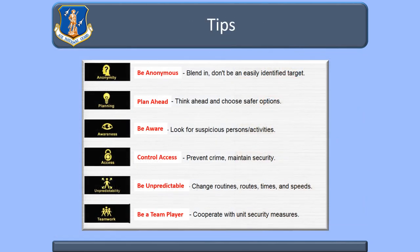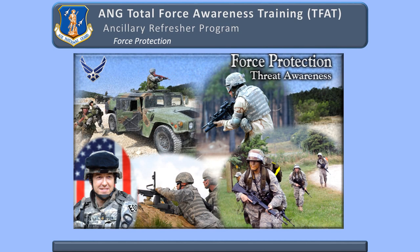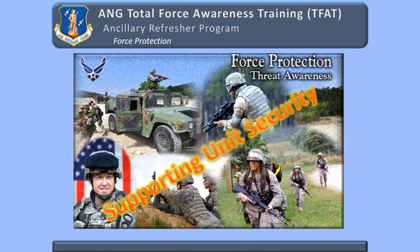To counter the previous indicators and make yourself less of a target, use these individual protective measures: be anonymous, plan ahead, be aware of your surroundings, control access, be unpredictable, and be a team player. Now that we have discussed threat factors, target selection and identification, and individual protective measures, we will talk about how you will support unit security programs.